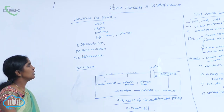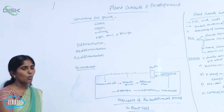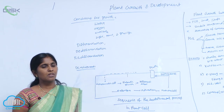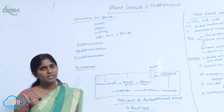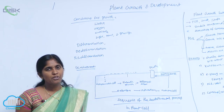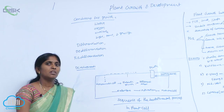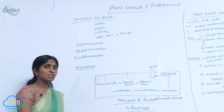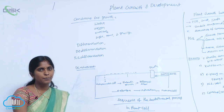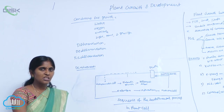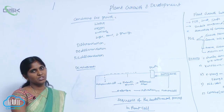Differentiation, de-differentiation, and re-differentiation. What is differentiation? The cells are formed from older cells. After formation, they become mature; they go for differentiation and maturation. At maturation, they belong to one specific function.